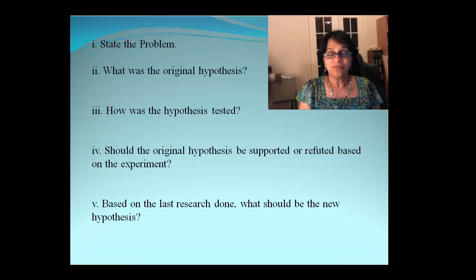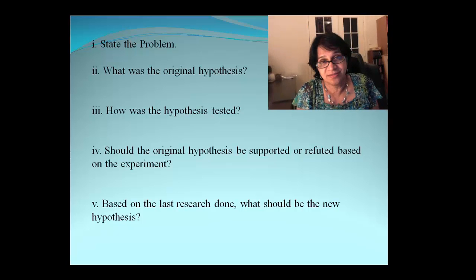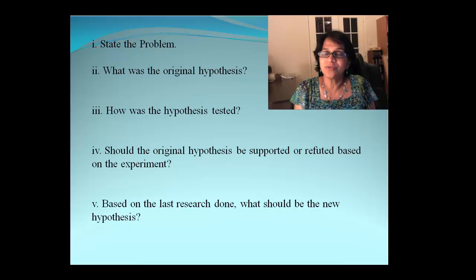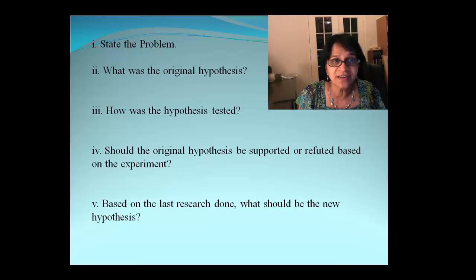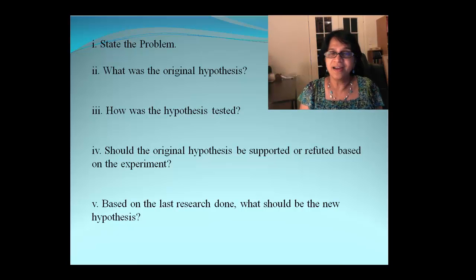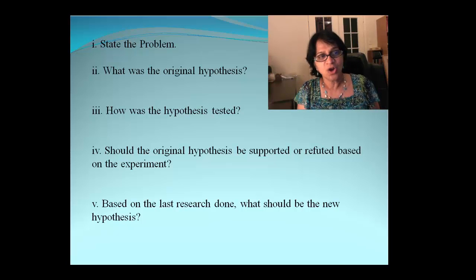The questions are, we need to find out what the problem is. With that problem, the beginning question is there. You are going to find out the original hypothesis which was made. Then, you can also write down how was it tested. Then, the experiments were done. So, you have to find out if the hypothesis was supported or it was refuted. And then, based upon the research done, what should be the new hypothesis. You can propose any new hypothesis.